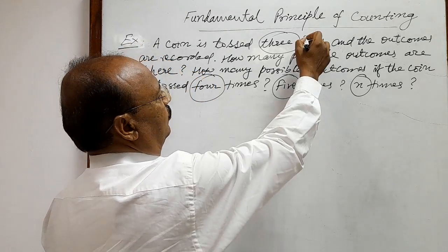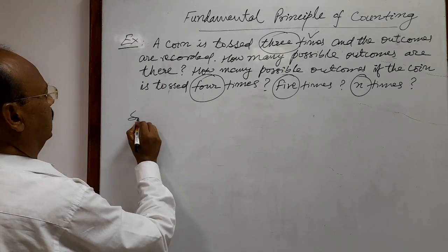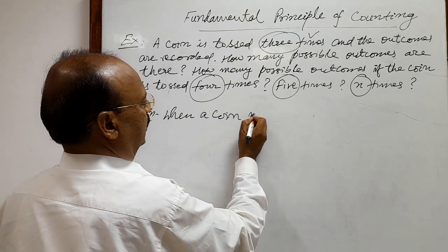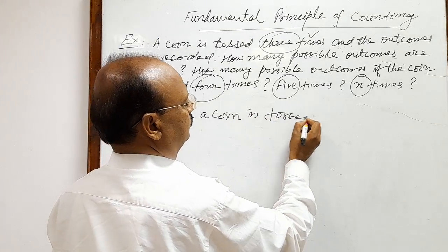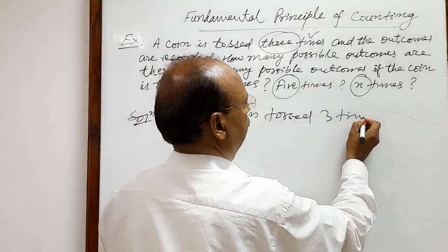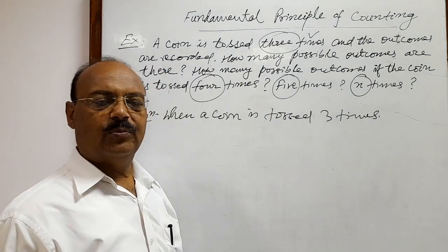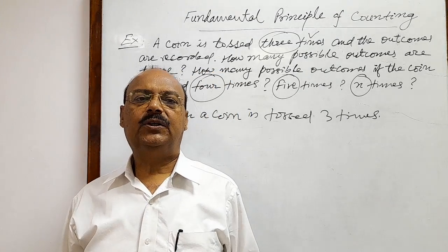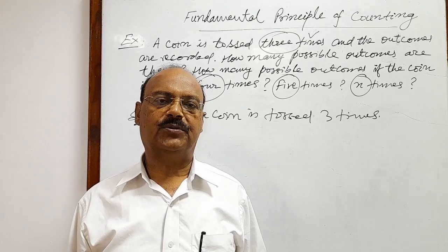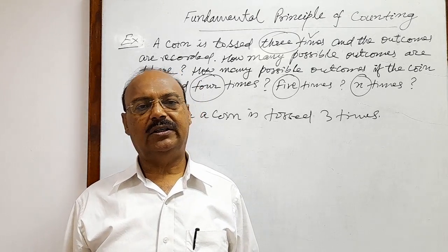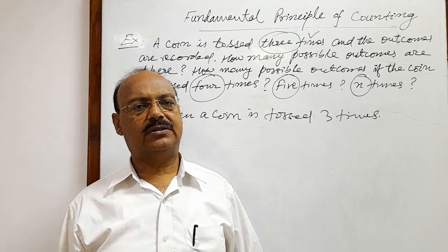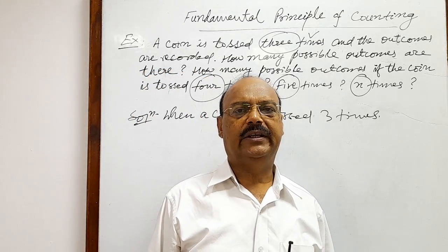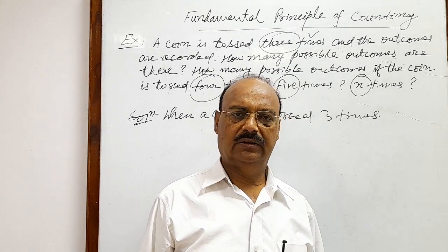Let us see the solution. When a coin is tossed three times, what is the total number of outcomes? You know that when a coin is tossed, there are two possible outcomes — either head or tail — every time whenever we toss a coin, any two outcomes are possible: either head or tail.